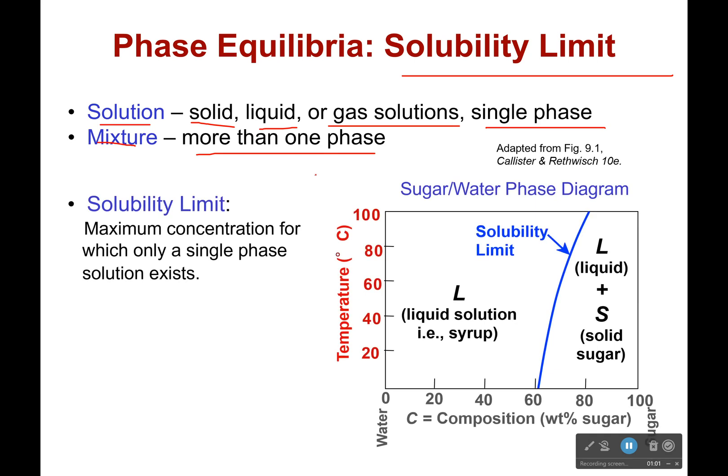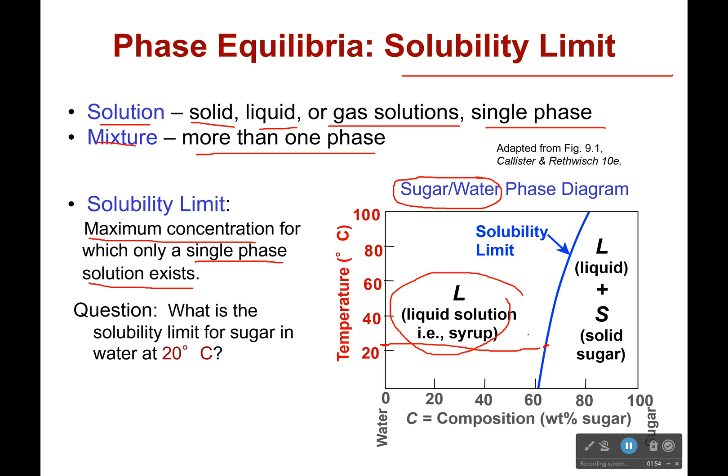What is this solubility limit? If you have like sugar and water, you take a glass of water and you start putting sugar into it. At first it's just syrup, and depending on the temperature of your house, which is probably going to be somewhere around here, you can add a whole lot of sugar by weight and it will continue to dissolve. That water is going to get thicker and thicker and turn more into syrup until eventually you reach a point right here. That's the solubility limit—the maximum concentration for which only a single phase solution exists. Because as soon as you pass that limit, you're no longer going to have just syrup; some of that sugar is going to fall out as solid sugar.